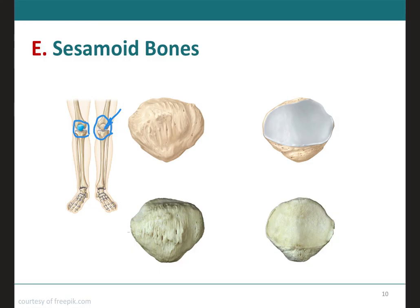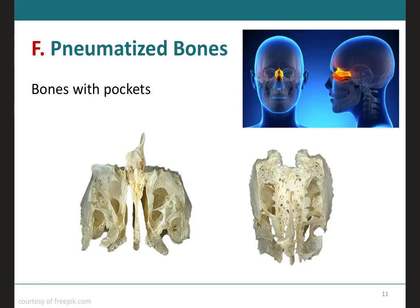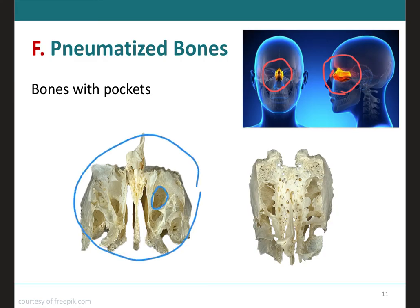The sesamoid bones to know are just the patellae. Moving on to pneumatized bones — there is only one type, which is the ethmoid bone. The ethmoid bone is located right behind the nasal bone and has a very unusual shape with lots of different pockets, which is why it's called a pneumatized bone. Pneumatized is reminiscent of pneumonia and lungs, which have lots of little holes and pockets — that's why the ethmoid bone gets this classification.